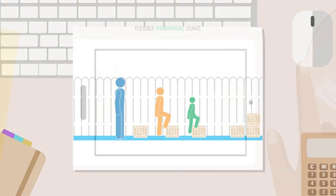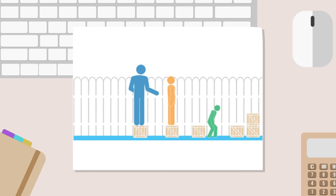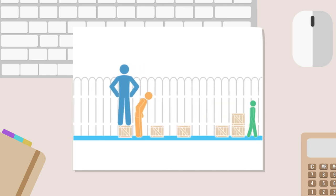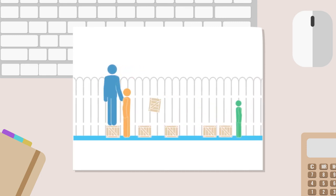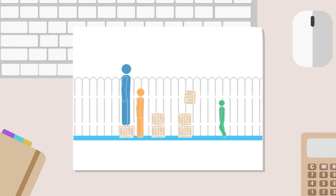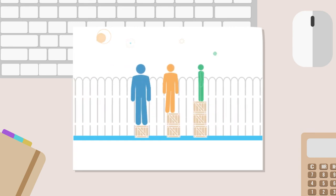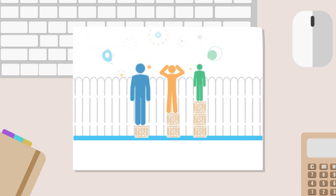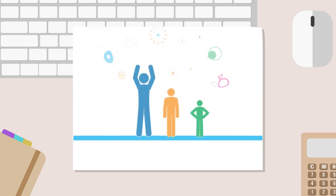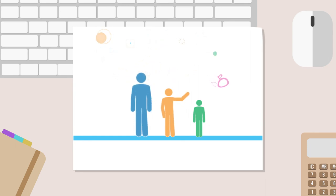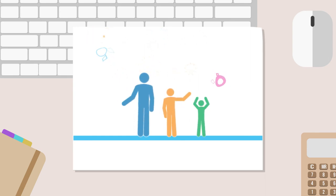Each of us has biases that can make it hard to know if and when equitable actions are needed. Use GBA Plus as a guide to challenge your assumptions and to learn more about how diverse people may experience policies, programs, and everyday conditions. By taking equitable action today, we set the stage for true equality tomorrow.